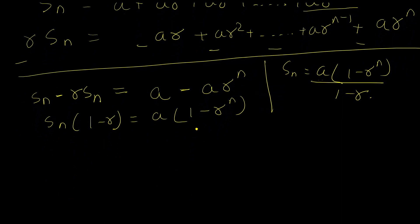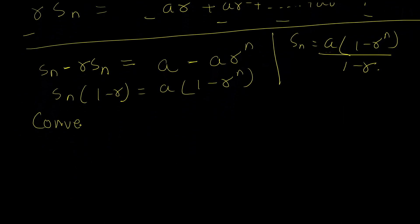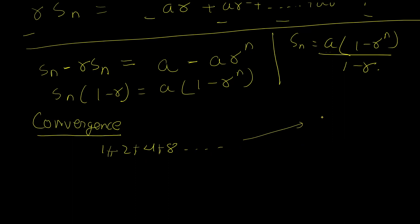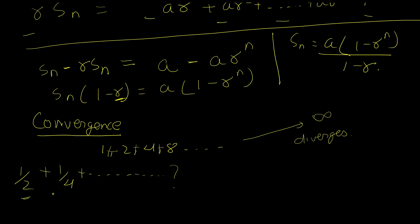On the topic of convergence: consider the series 1, 2, 4, 8 — each new term is bigger than the last, and the sum explodes to infinity; it diverges. But for any series whose ratio is less than one, like one-half plus one-quarter and so on, even though we keep adding positive numbers, the sum cannot explode — it converges to a specific value.